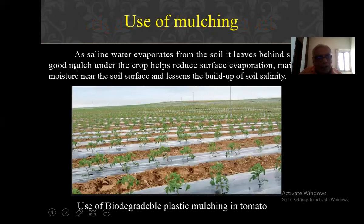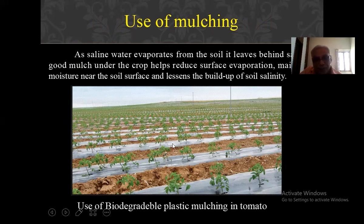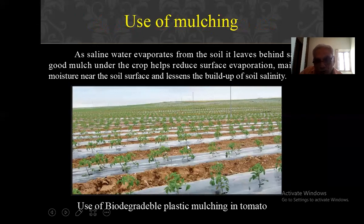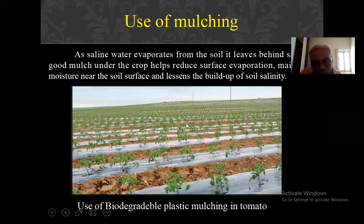When saline water evaporates from the soil it leaves behind salt. Good mulch under the crop will reduce surface evaporation, maintain moisture near the soil surface, and lessen the build-up of soil salinity. With plastic mulch, evaporation rate is decreased, soil remains wet, and the concentration of salt does not increase — so mulch is advantageous. If plastic mulch is not available, you can use crop residue or straw.